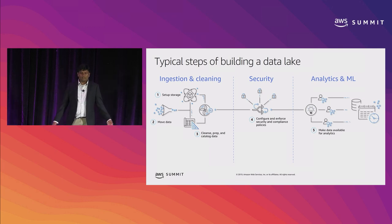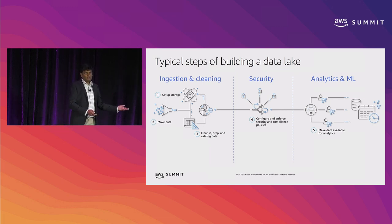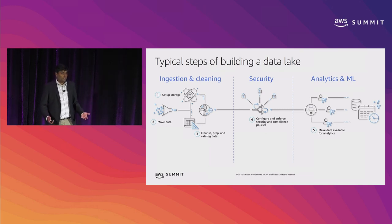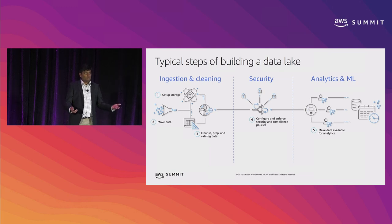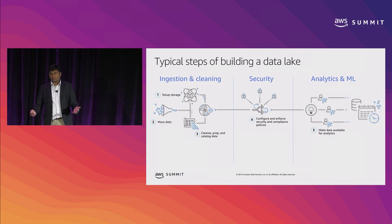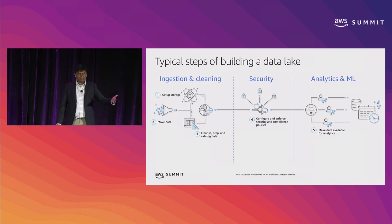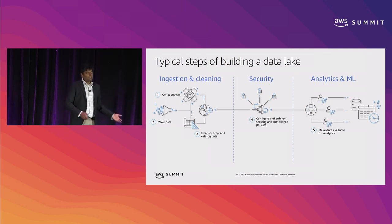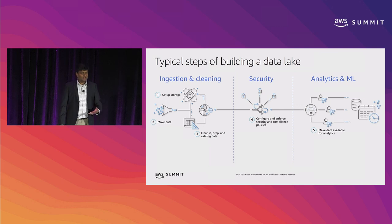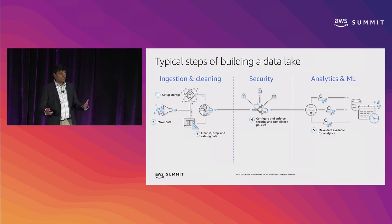The process everyone has heard about is ingesting and cleaning your data to get it into a data lake. First, you have to set up landing areas — if you're doing it on S3, buckets where you put raw data, and other areas for processed and analytics-optimized data. Then you identify all your sources — structured databases, NoSQL databases, logs in S3, or streaming systems like Kafka and Kinesis. After moving data into landing areas, you do the heavy work of cleaning, combining, cataloging, and prepping data for analytics.